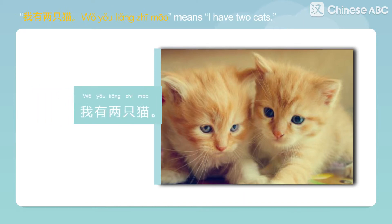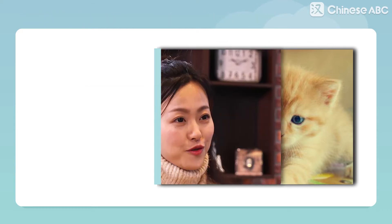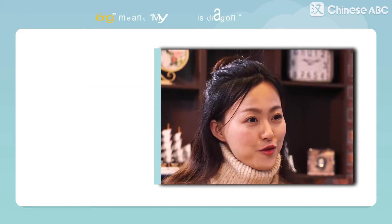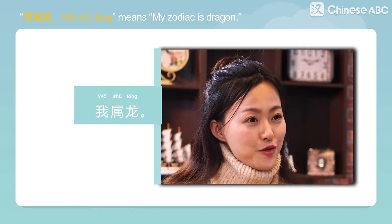我有兩隻貓 Means, I have two cats. 我屬龍 Means, my zodiac is dragon.